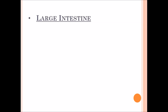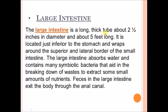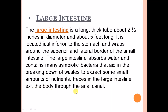The large intestine is a long, thick tube about two and a half inches in diameter and about five feet long. It is located just inferior to the stomach and wraps around the superior and lateral border of the small intestine. The large intestine absorbs water and contains many symbiotic bacteria that aid in breaking down waste to extract small amounts of nutrients. Feces in the large intestine exit the body through the anal canal, or anus.